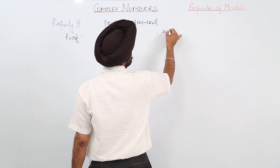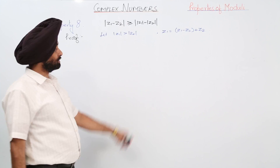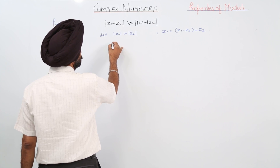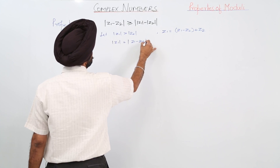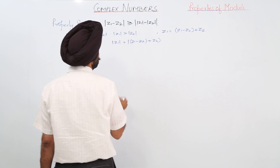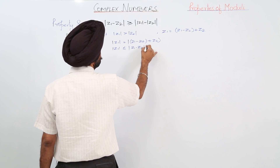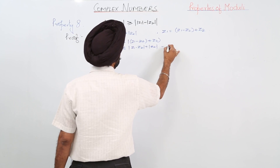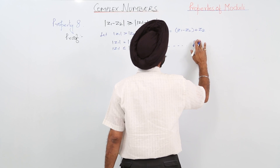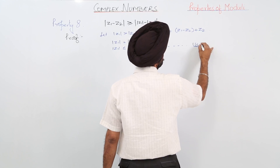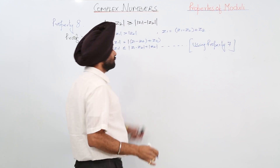Can we write z1 as (z1 - z2) + z2? If we open the bracket, we get one and the same thing. So z1 is equal to (z1 - z2) + z2. Now applying the modulus, z1's modulus is less than or equal to the modulus of (z1 - z2) plus the modulus of z2. I have used property 7 which we have done earlier.